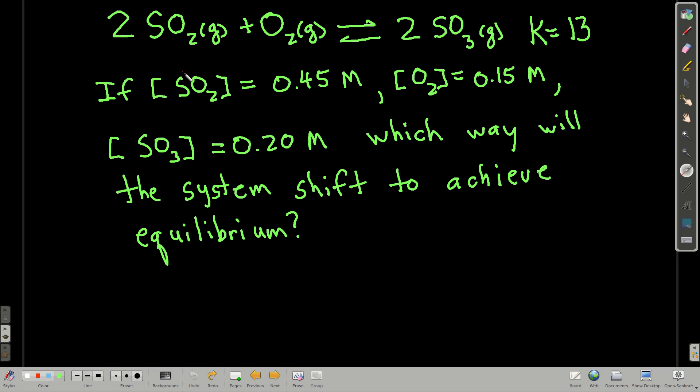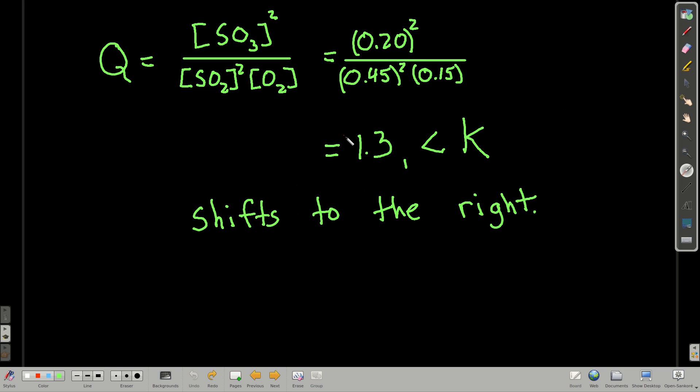So for example, for this equilibrium here, we know that K is equal to 13. Let's say you have this system set up where these concentrations are present. We want to know which way the system is going to go in order to achieve equilibrium. Is it at equilibrium? If so, Q will be equal to K. Is it going to shift to the right, make more sulfur trioxide, or is it going to shift to the left, make more sulfur dioxide and oxygen? Well, let's see.